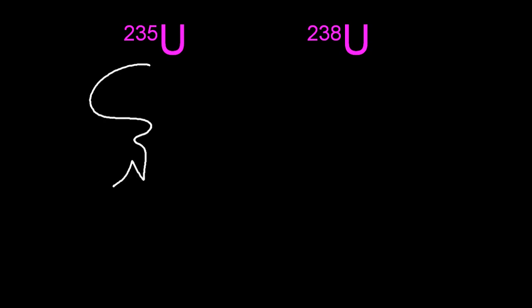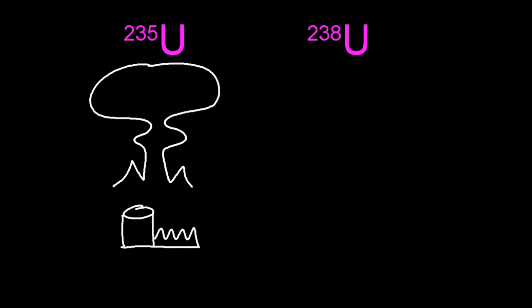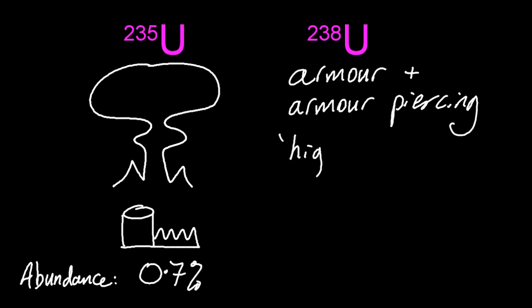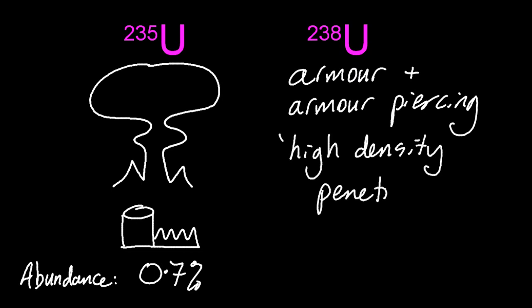Let's look at an example. Uranium has two main isotopes: uranium-235, used in nuclear bombs and nuclear power stations — only 0.7% of uranium, and I'm glad it's not any more than that — and uranium-238, which is used in armour and, ironically, in armour-piercing weaponry. Uranium-238 is a so-called high-density penetrator.